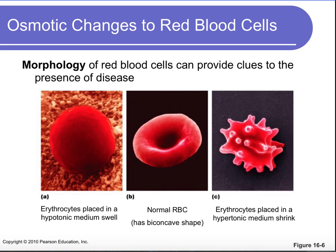Structure is equal to function. When we look at our blood cells, if the structure — the morphology or shape — has changed, it gives us a clue about what may be happening in our body. The middle figure here shows what a normal red blood cell looks like: a biconcave shape, essentially like a donut without the middle completely hollowed out. If the cell is spherical, that tells us water has rushed into the red blood cell.